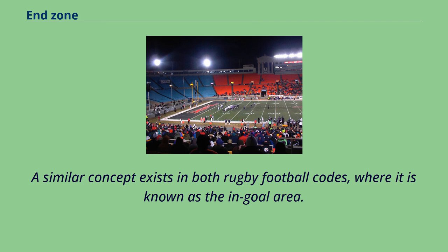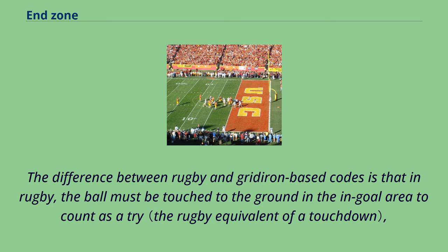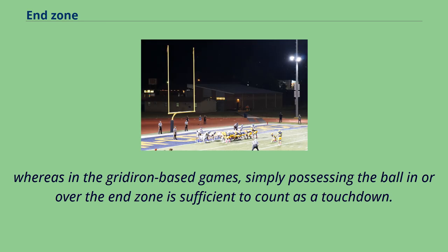A similar concept exists in both rugby football codes, where it is known as the end goal area. The difference between rugby and gridiron-based codes is that in rugby, the ball must be touched to the ground in the end goal area to count as a try, whereas in the gridiron-based games, simply possessing the ball in or over the end zone is sufficient to count as a touchdown.